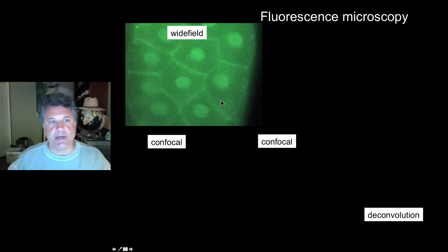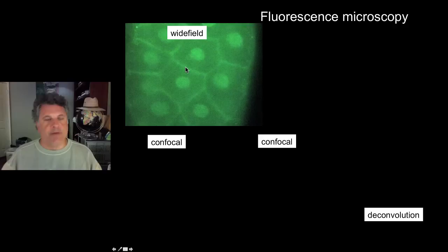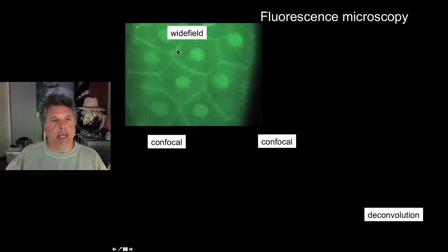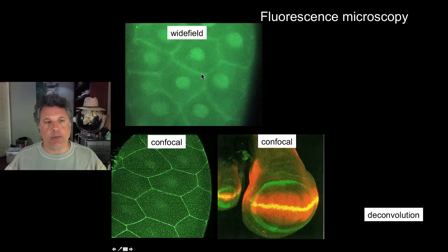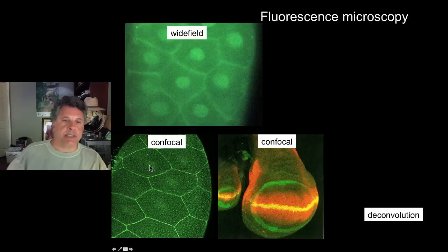Let's look at some examples of fluorescence microscopy. This is wide-field fluorescence microscopy taken by a CLU student, visualizing the distribution of actin in the cell and another protein found in the nucleus. The actin is concentrated at the periphery of the cells. You'll notice that the image is rather blurry - that is the case with most wide-field fluorescence microscopy. One technique used to sharpen these images is confocal microscopy. Here is the same tissue visualized with confocal microscopy - look at the resolution and sharpness of the image.